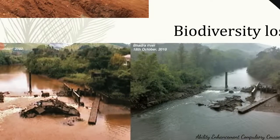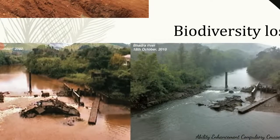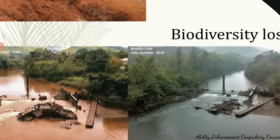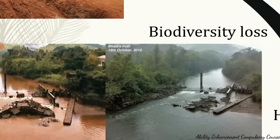An example is the Bhadra River near the Kudremukh iron ore company, which was mining iron ore from the Kudremukh area of Karnataka in the Western Ghats. They were given a 30-year mining lease in 1969 but continued operations after 1999. By 2002, the color of the river had changed completely due to iron deposits, impacting the flora and fauna. After the company was asked to shut down in 2005, by 2010 the river's water color had visibly recovered.